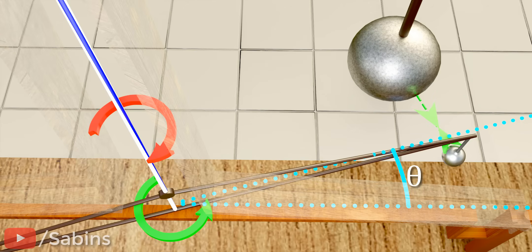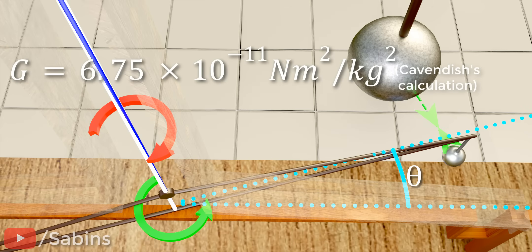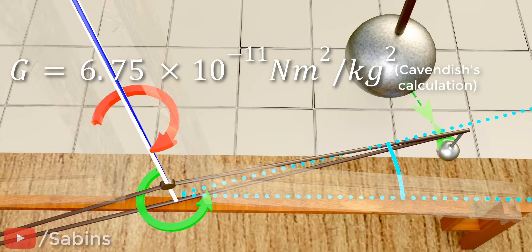Using this twisted angle at the balance as an input, Cavendish calculated the value of G for the first time. That, too, quite accurately.